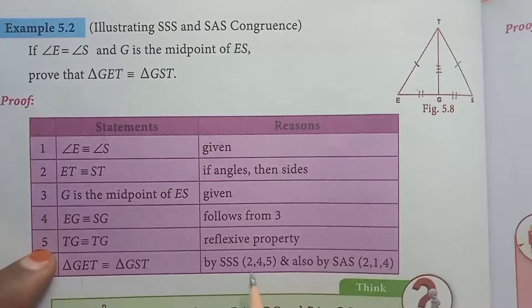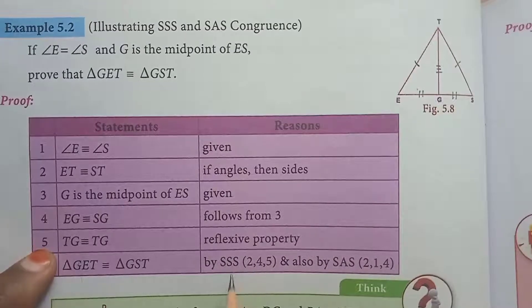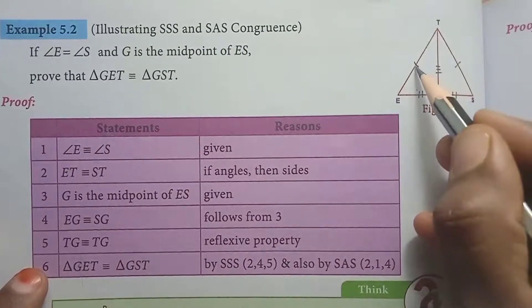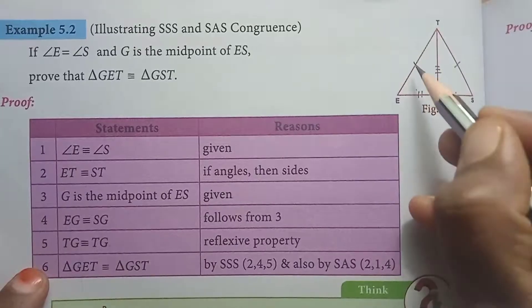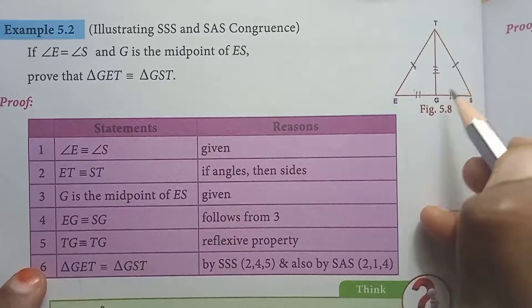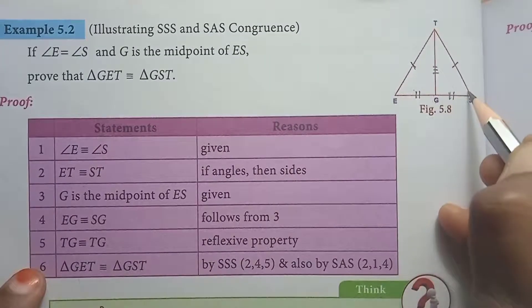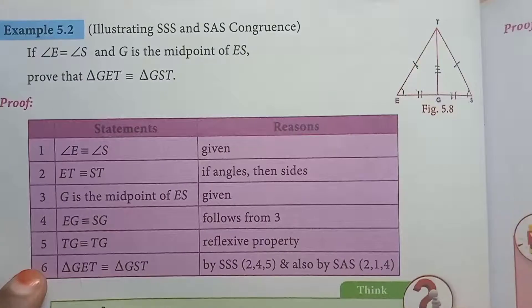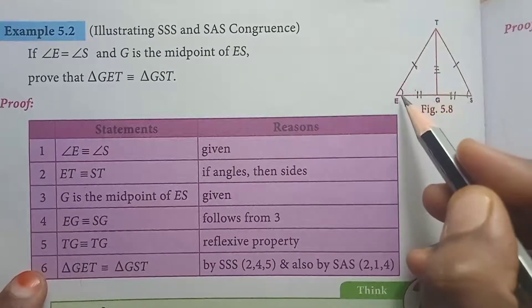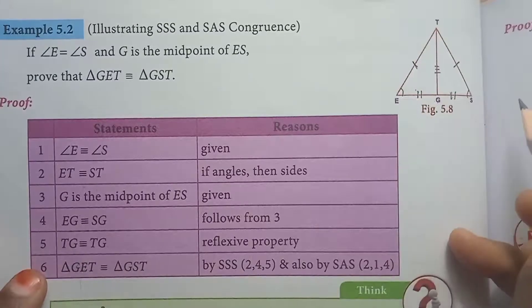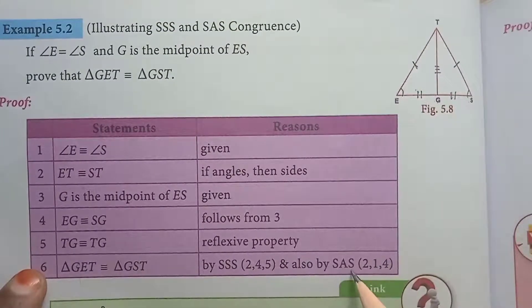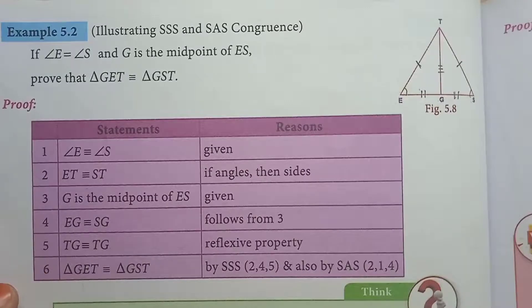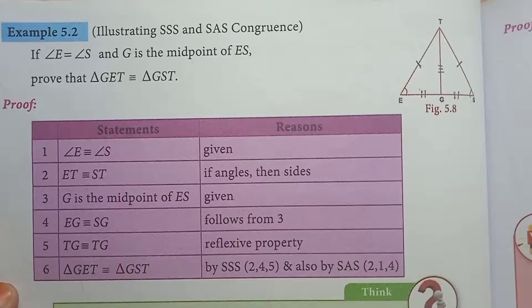Clear? So by the SAS — side, angle, side — congruent property, the two sides are equal and the included angle is equal. The included angle equal — that is angle E equals angle S — is given in the question. So by SAS congruence, as shown in the diagram, triangle GET is congruent to triangle GST. That is what we have proved.